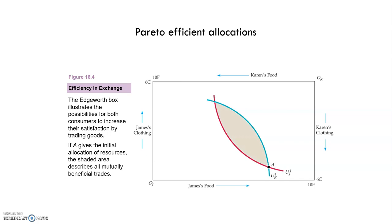What is a Pareto efficient allocation? This slide shows several indifference curves for both James and Karen. The red or pink one is the indifference curve for James, because his origin is here, so the indifference curve is going to have this shape. For Karen, the blue one is her indifference curve, because her origin is here. Point A is where both indifference curves cross.